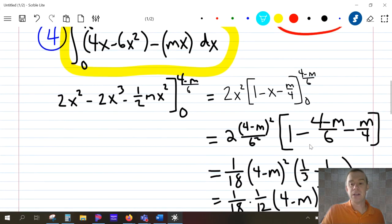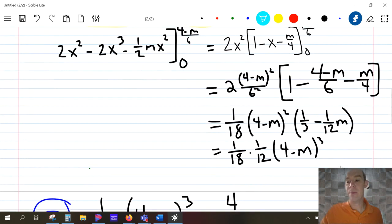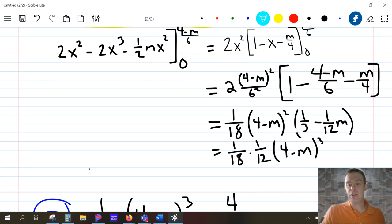Now, when you simplify all this, you're going to get 2/36, which is 1/18, times (4 - m)². And then if you simplify this thing in brackets, you get this 1/3 - (1/12)m in parentheses. Finally, you end up with, if you factor out 1/12, you can factor 1/12 out of here, and you're going to get another (4 - m). And so you end up with 1/18 times 1/12 times (4 - m)³.